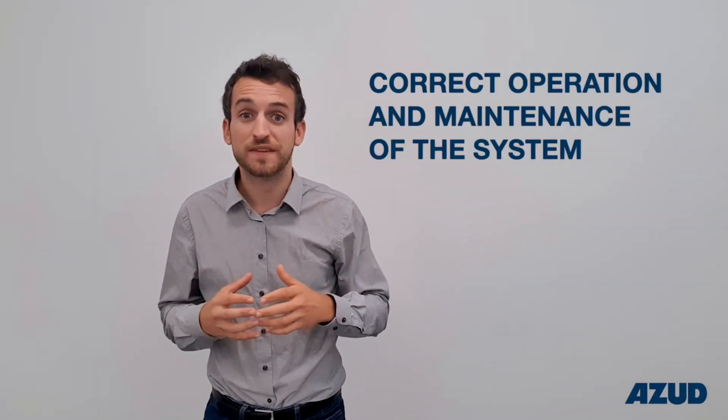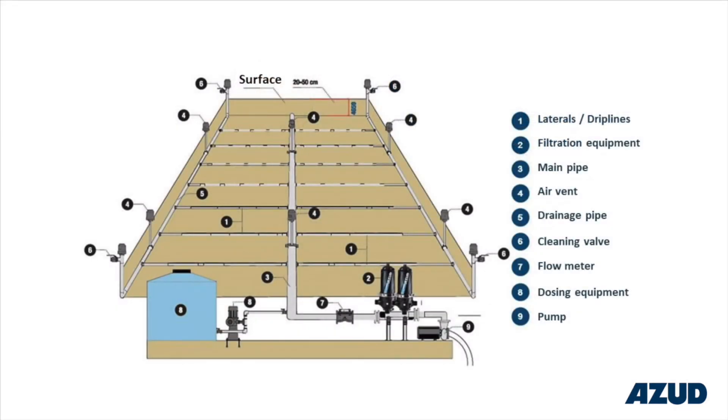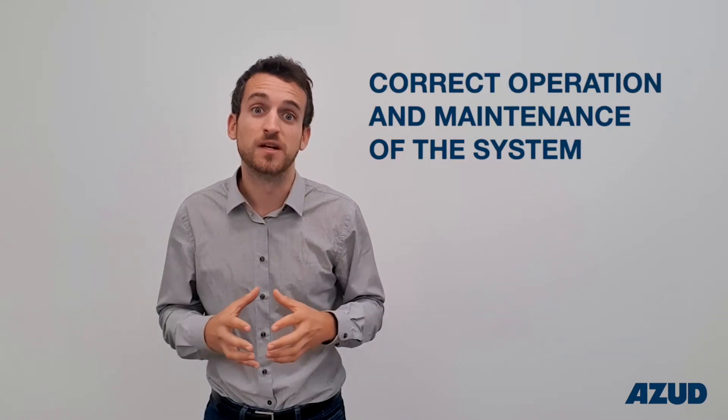And finally, ensuring that the system will run according to the design parameters of flow and pressure. For that, the operational and maintenance task scheduling is required, and thereafter the system life expectancy will be reached.